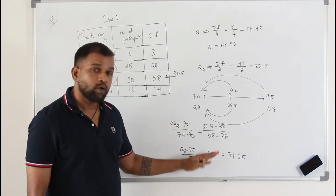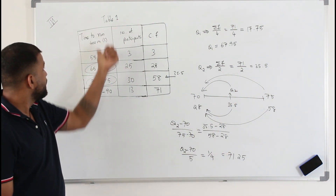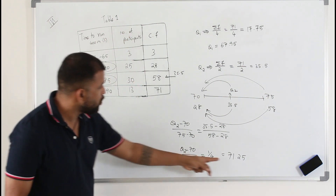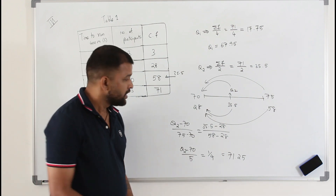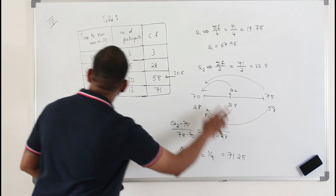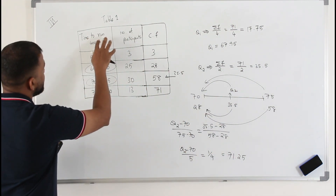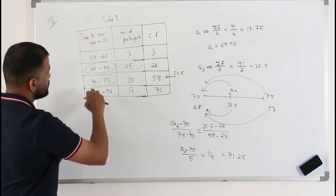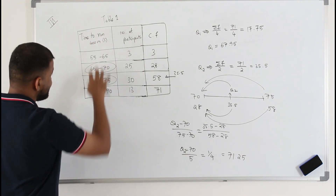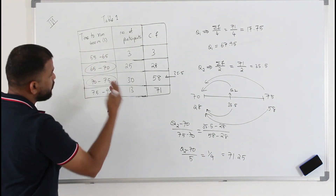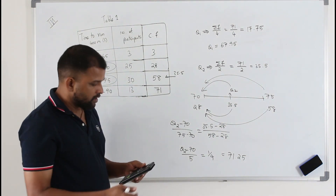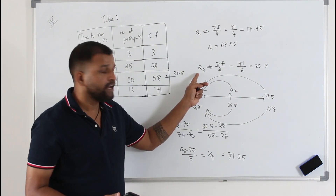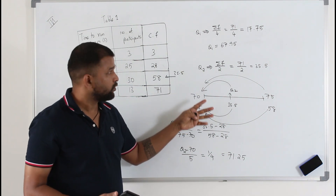So the median is 71.25. We are finding the lower quartile, median, and upper quartile in x — not in frequency — so don't worry that the number is larger than the total figure of 71. The value 71.25 is the time taken to finish the 400 metres in seconds, so the median is 71.25 seconds.